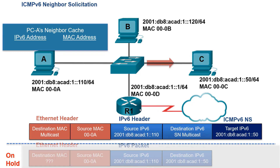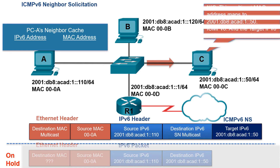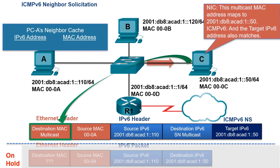Host C receives the Ethernet frame. This time, the Ethernet multicast MAC address matches a MAC address associated with Host C — specifically the one mapped to Host C's IPv6 Solicited Node multicast address. Therefore, Host C accepts the frame and passes it up to its IPv6 process and then its ICMPv6 process. The target IPv6 address in the ICMPv6 header matches Host C's own IPv6 global unicast address, so Host C knows it is the target of this Neighbor Solicitation Message.